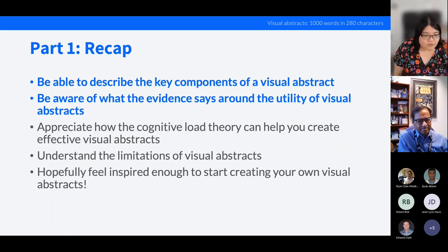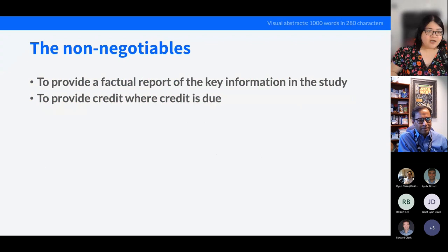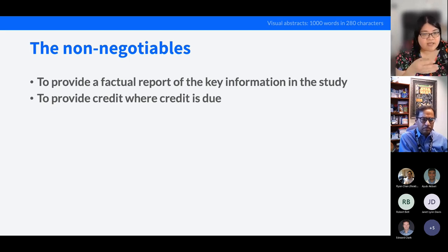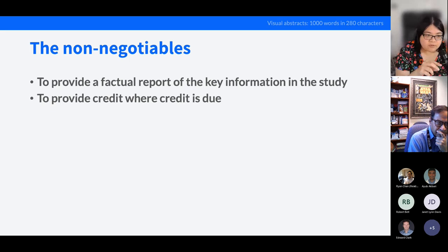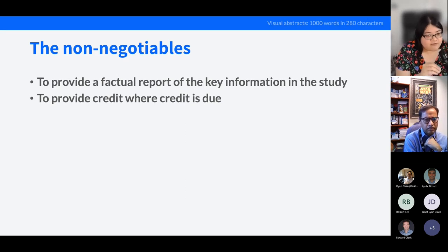Before the fun part, two non-negotiables. First, you must provide a factual report of the key information in the study — you cannot interpret data however you want or bend it to suit your will; you must report it as the authors have written it. Second, you must provide credit where credit is due. You cannot claim ownership for elements that don't belong to you, because these are going to be shared in the public domain, and it's very important to stick to copyright rules.